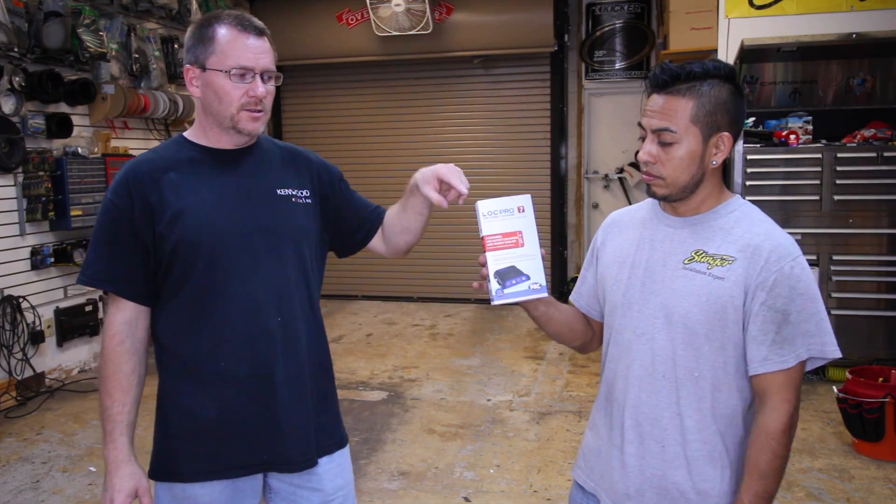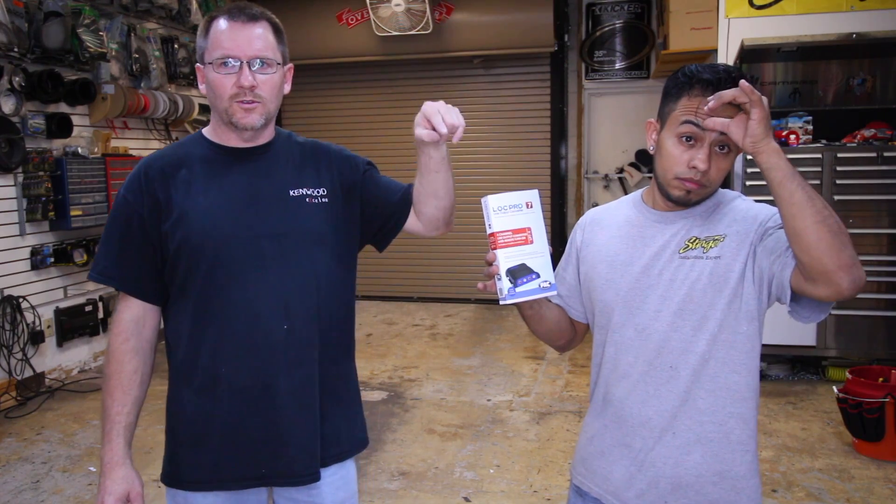So there you go. Now you can take that tweeter, take that midrange output, combine them together, hook up a standard two channel amplifier, a four channel amplifier, whatever it is you want to do, and rock on. There you go. And like we said, the nice thing about this is it creates its own remote turn on. So it makes things extra easy. Awesome.